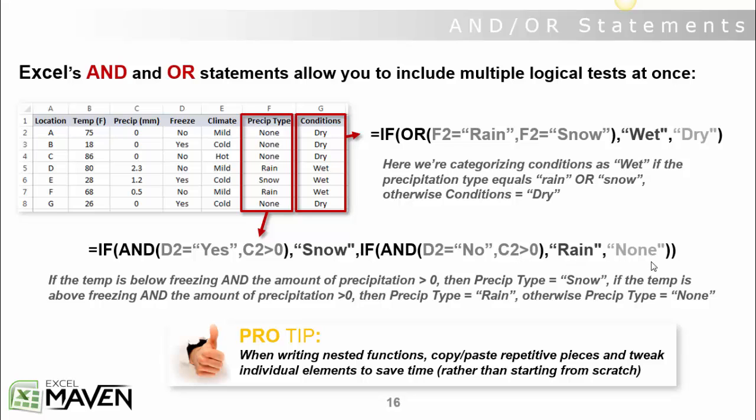Then you're always going to wrap it up at the end with your catch-all value if false value. In this case, it's just going to be none. So in order for this test to be true, both of these conditions need to be true because it's an and statement. And then if none of these are true, it's going to return the final value, which is none.